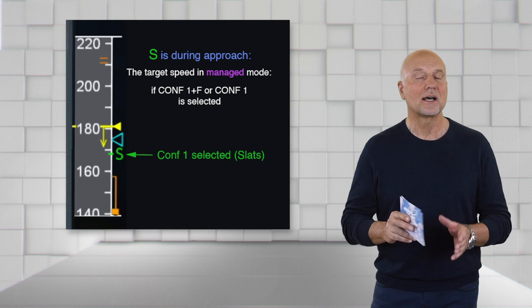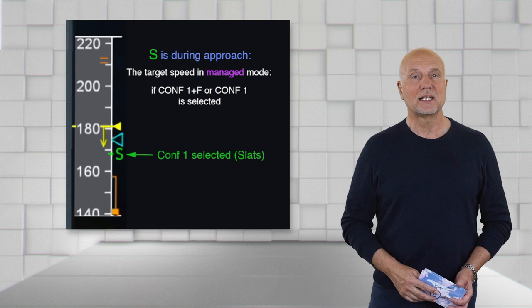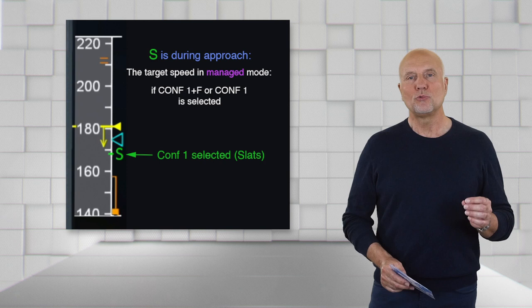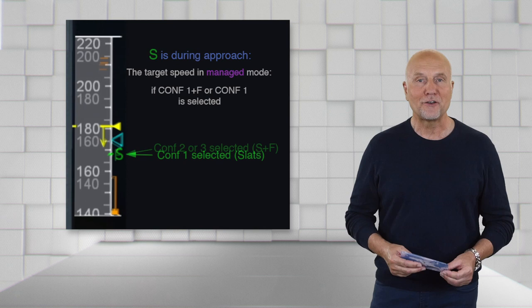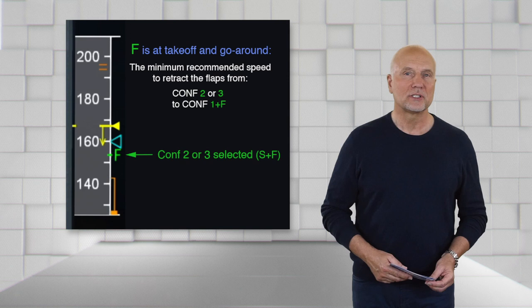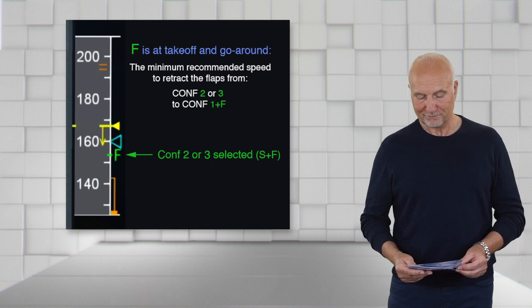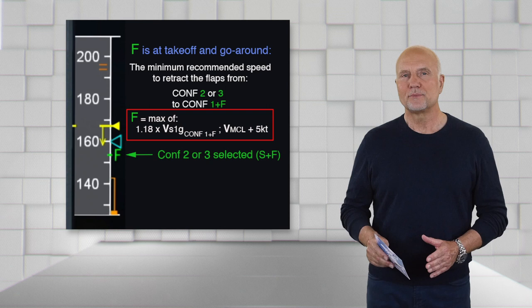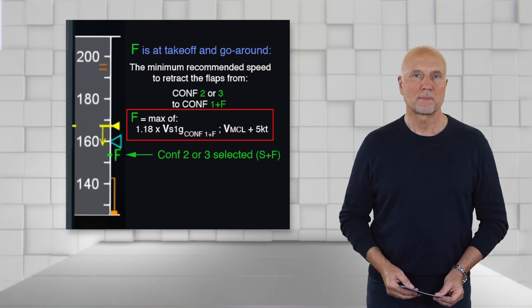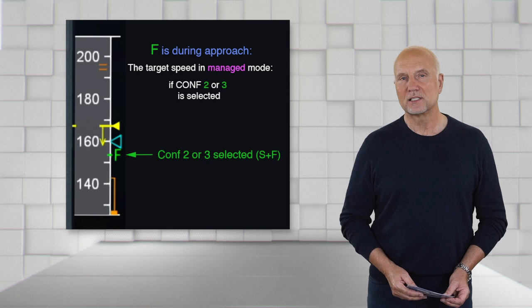Here in the presentation, speed is selected as we can see by the cyan triangle. The moment the flap lever is moved to config 2 or config 3, S disappears and F appears on the speed scale. During takeoff or go around, F symbolizes the minimum recommended speed to retract the flaps from config 2 or config 3 to config 1 plus F. The margin of F is the greater of 1.18 times VS1G for config 1 plus F and VMCL plus 5 knots. As soon as you are in the approach in config 2 or config 3 and speed is managed, F will be the target speed.